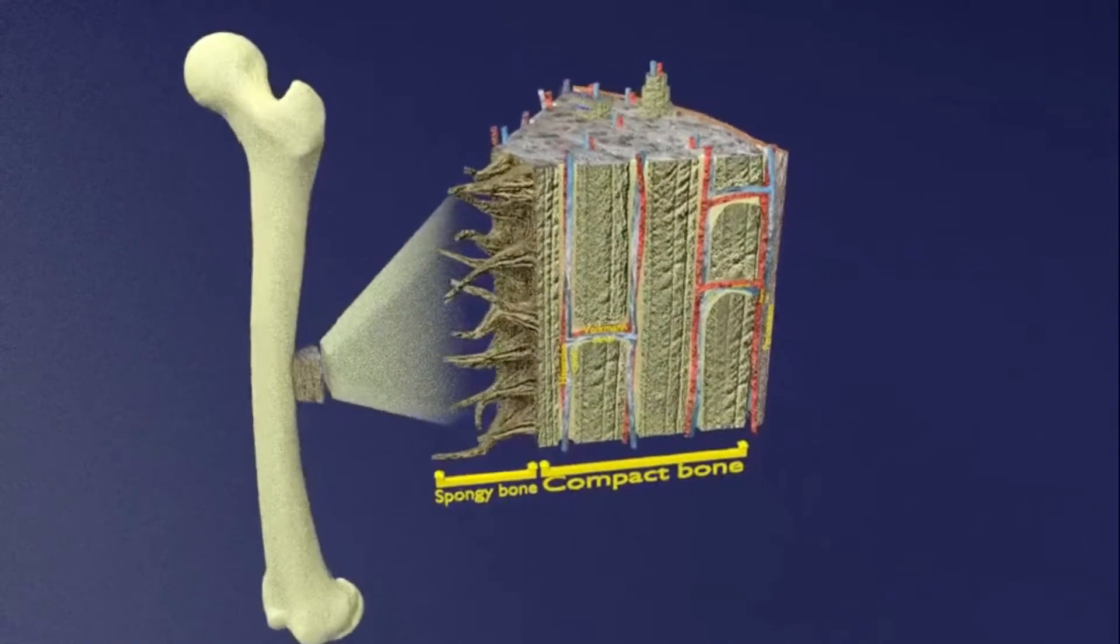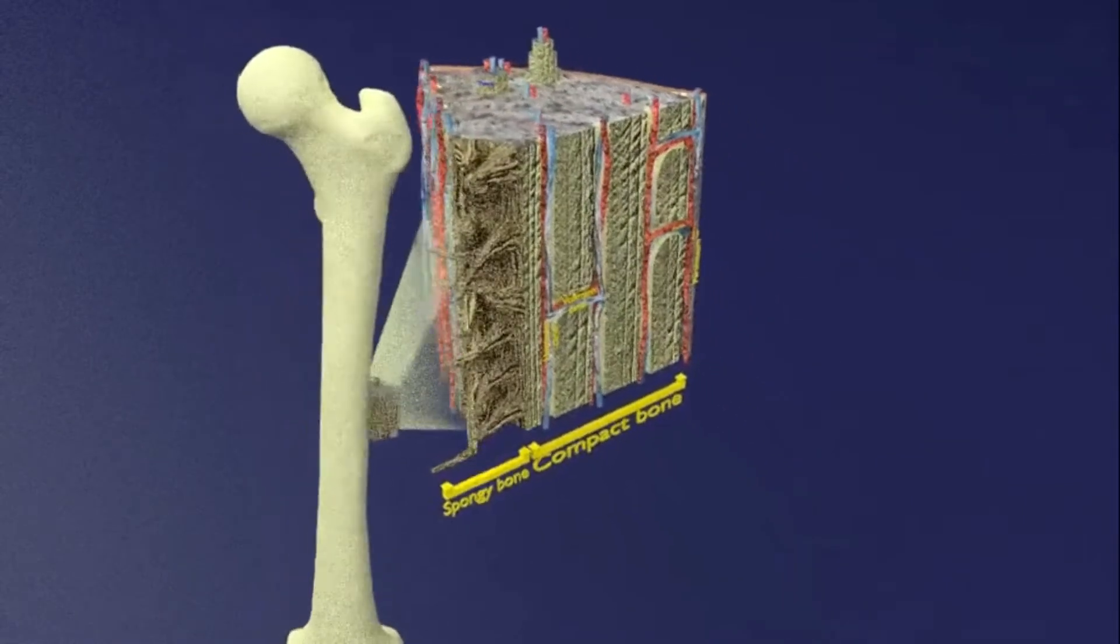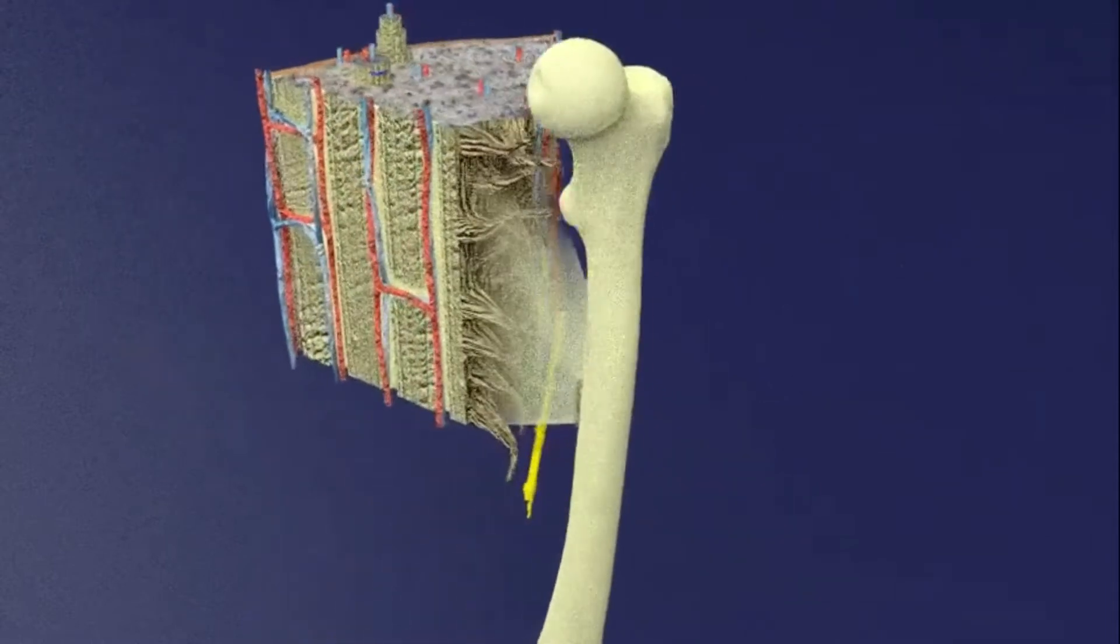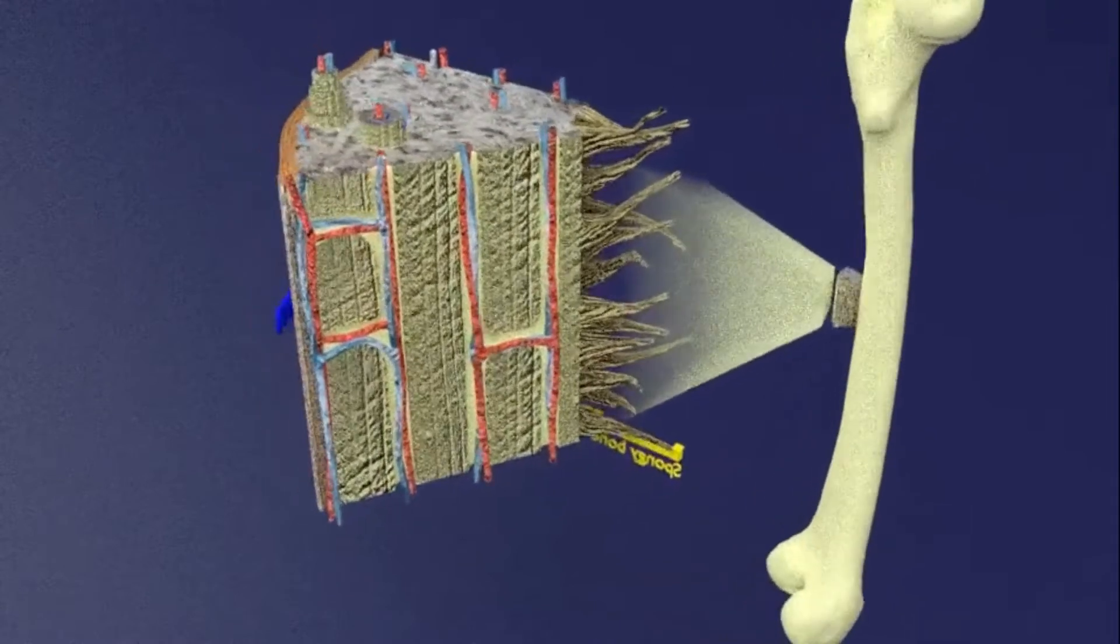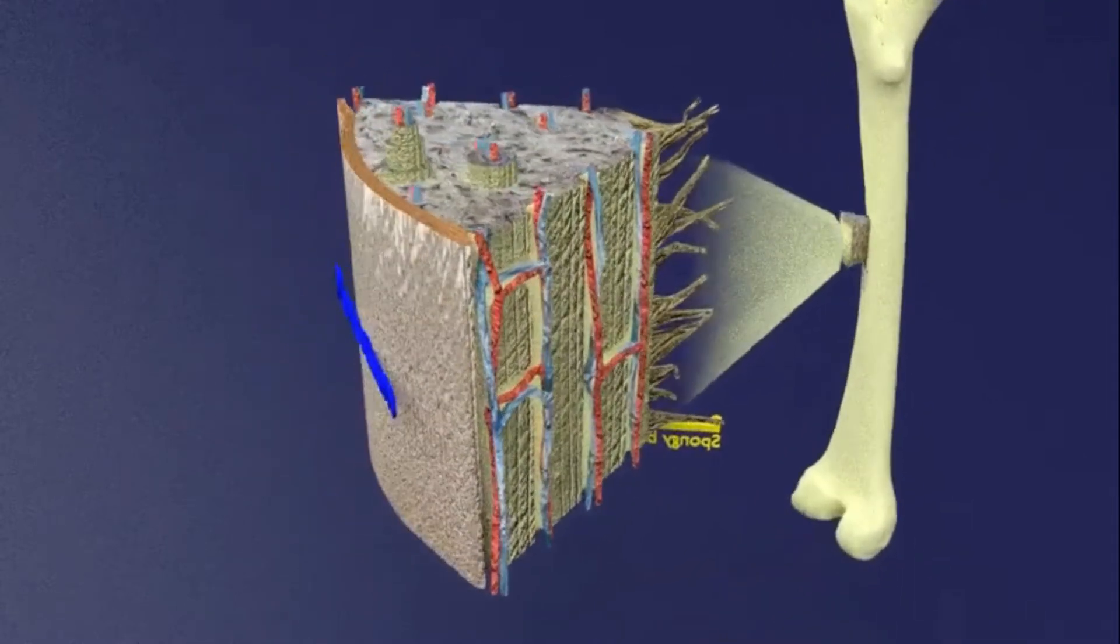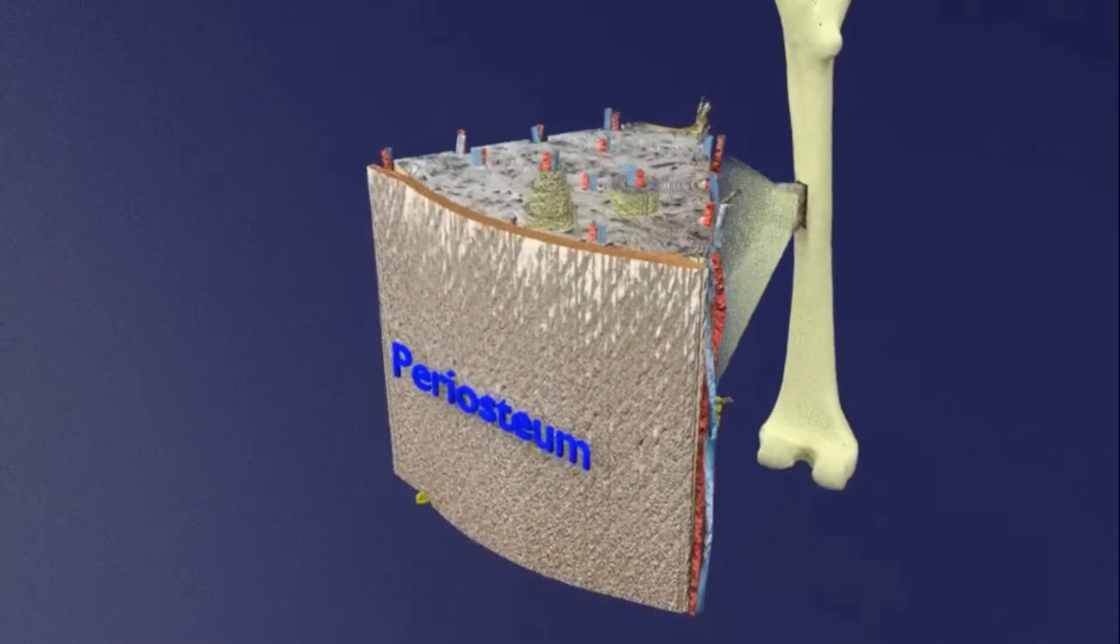The entire bone is lined by the periosteum all around, as seen in the 360 degree view and is the outermost covering of the bone. Hope you understand the microscopic structure of the bone clearly through this animation.